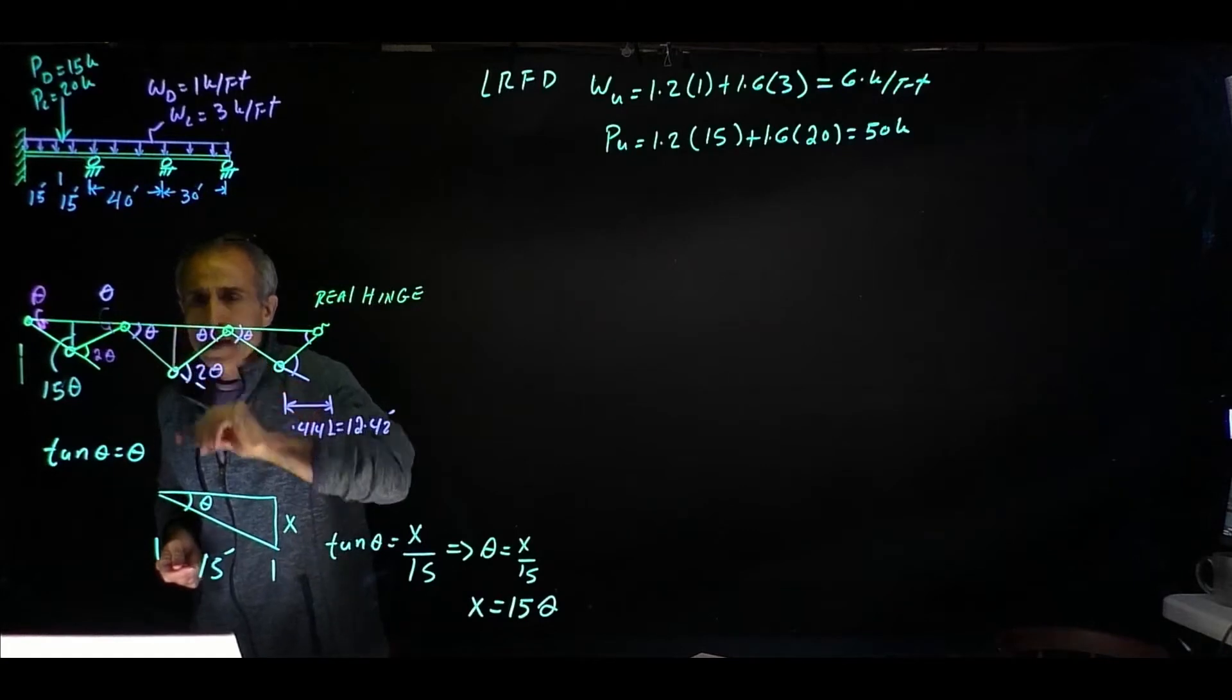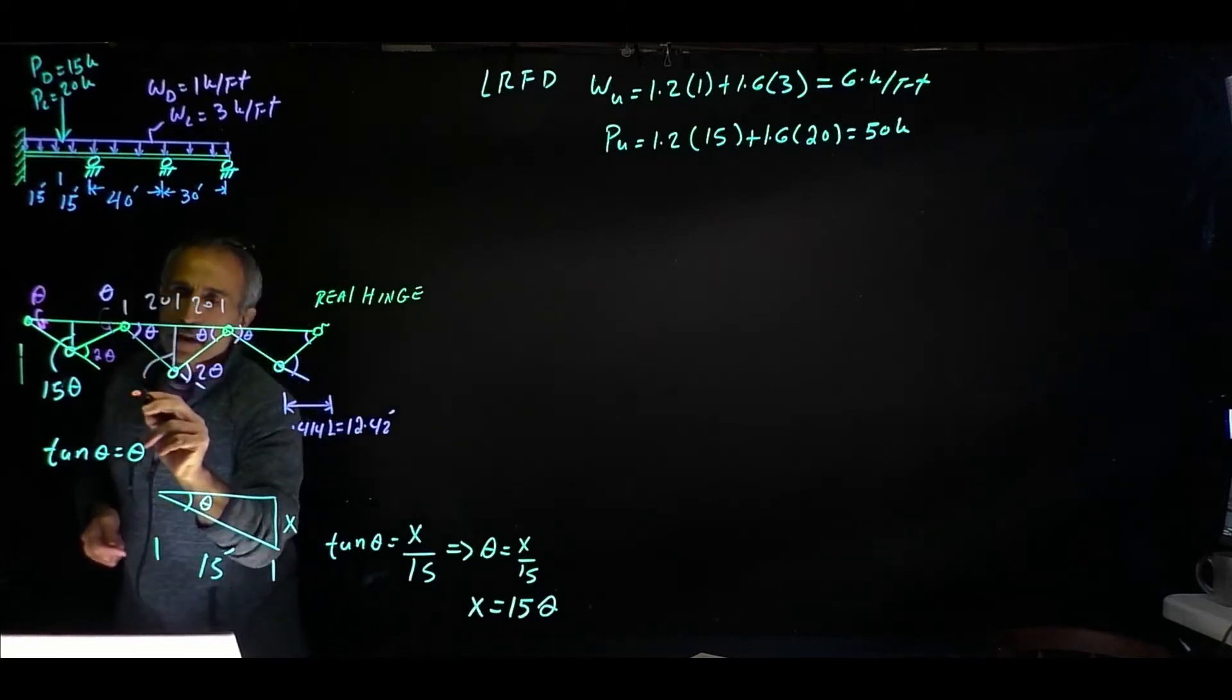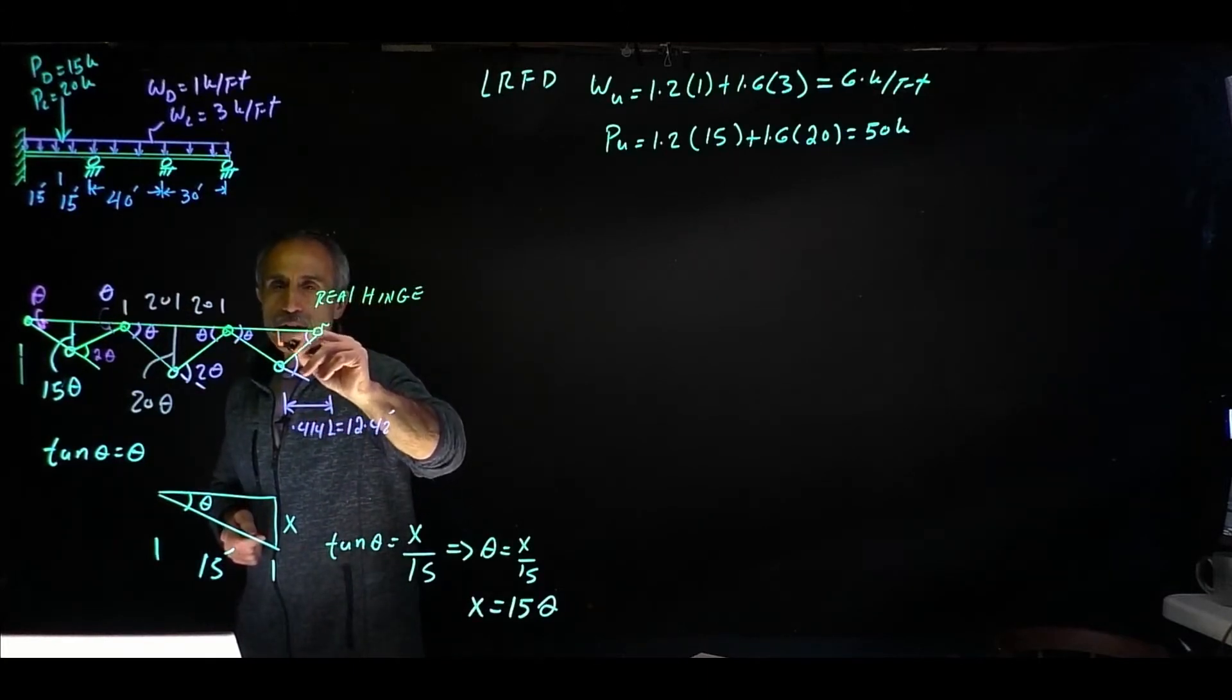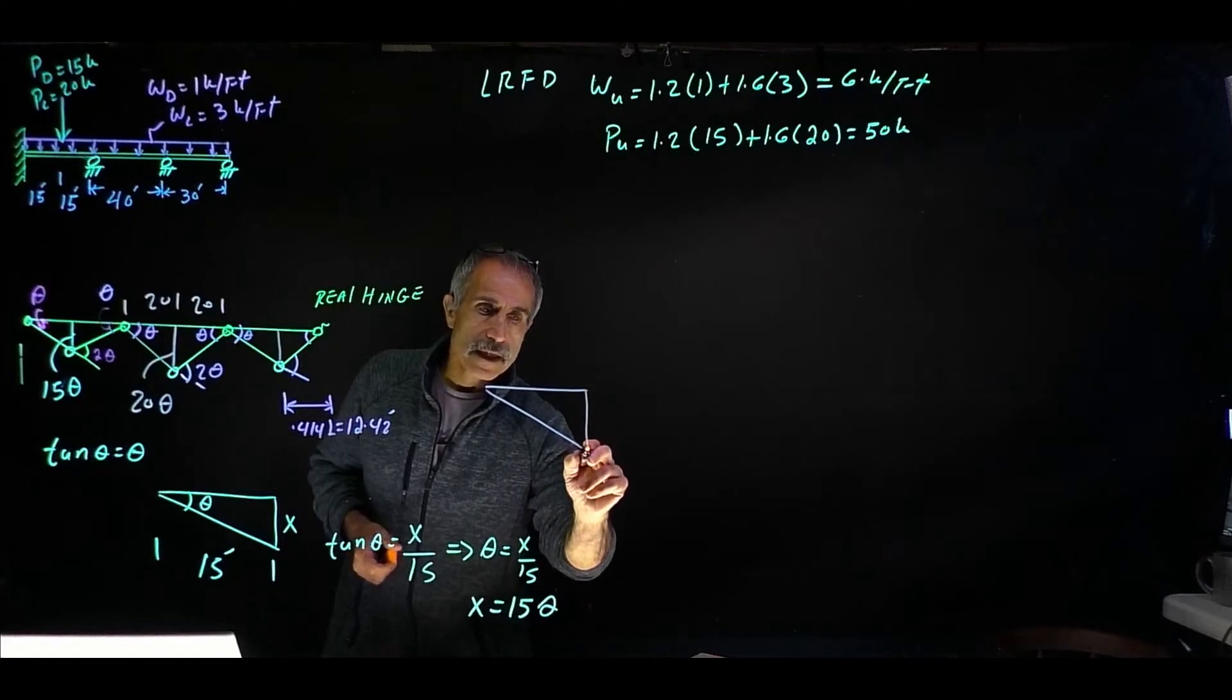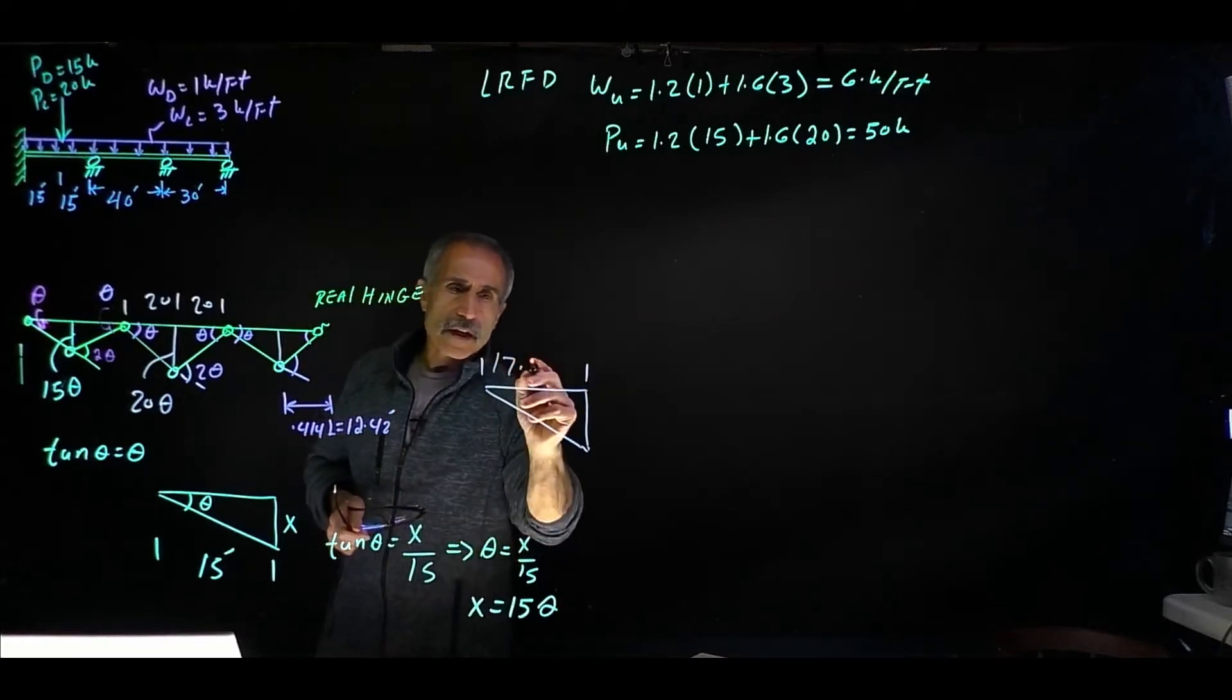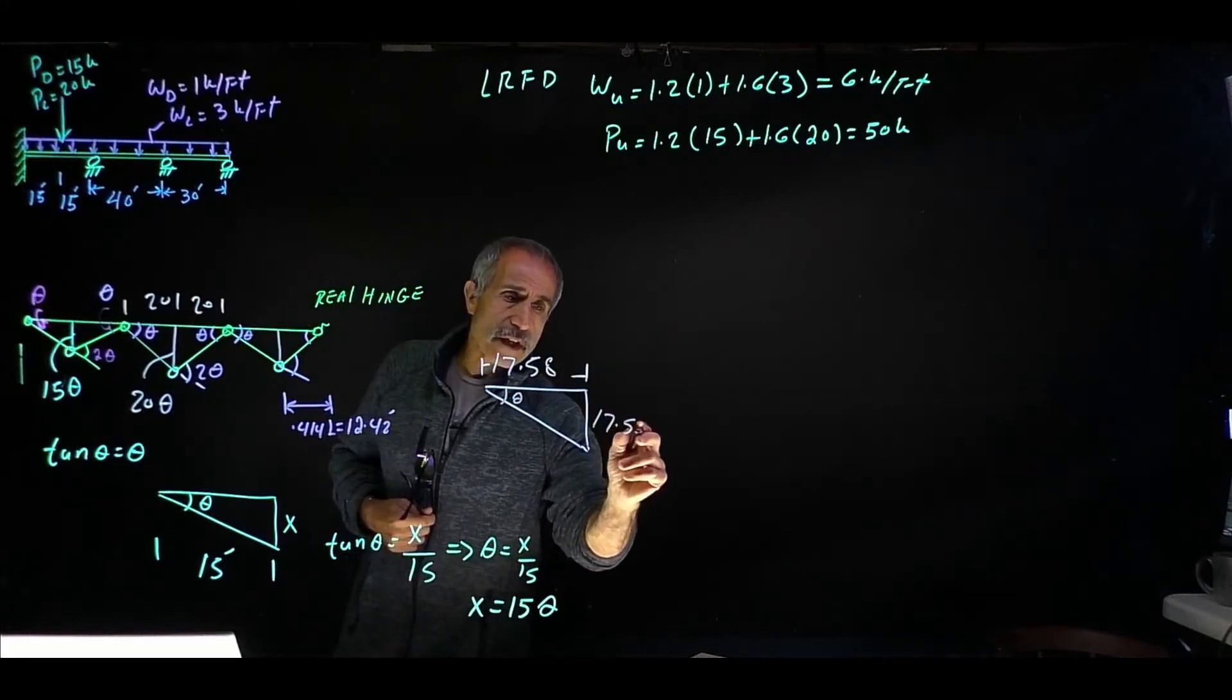If we do the same thing over here, same exact way, this distance right here becomes 20, this is 20, that's 40 feet. So this distance is 40, we know that. And this is 20, and this is 20, so this right here is 20 theta. This one is going to be different, because right here we have 0.414L, that's 12.43, and let's find out what is this going to become. I'm going to go ahead and make a blow up right here. This distance is basically 30 minus 12, so it is 30 minus 12, that becomes 17.5, all right, 17.58. And this angle is theta, so now this becomes 17.58 theta.